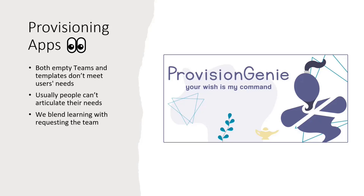On the other hand, a lot of provisioning solutions work with templates that provision a certain number of channels with names and then maybe a list somewhere for planning. That also doesn't fit users' needs because they always want something slightly different. Additionally, people can't really articulate their needs. That is why we wanted to build a solution where we blend learning with the actual requesting of the team — explaining in the application why they would want different channels, why they would want an extra library or a list. And that is how Provision Genie started.